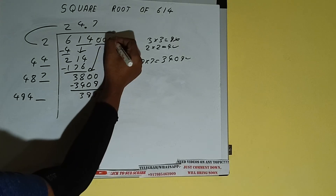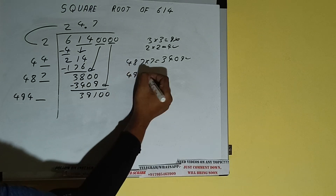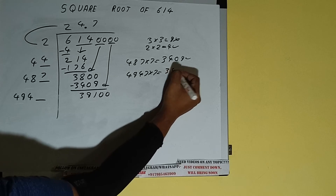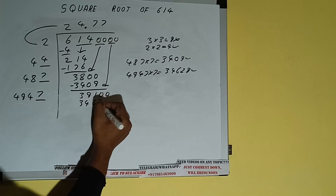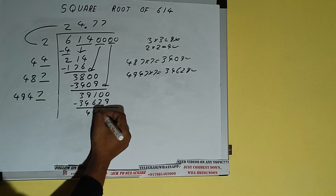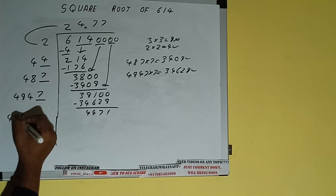Now 487 into 7, with 8, so add both: 487 plus 7 will be 494, and one digit extra. This number we need to make it big, so bring the next pair of zeros down and it will be 39100. Compare this 494 and 391. 49 times 8 is 392, so we cannot try 8 times — we have to try 7 times. 4947 into 7 we can try and we'll get 34,629, which is good. So 7 here and 7 here — 34,629 subtract.